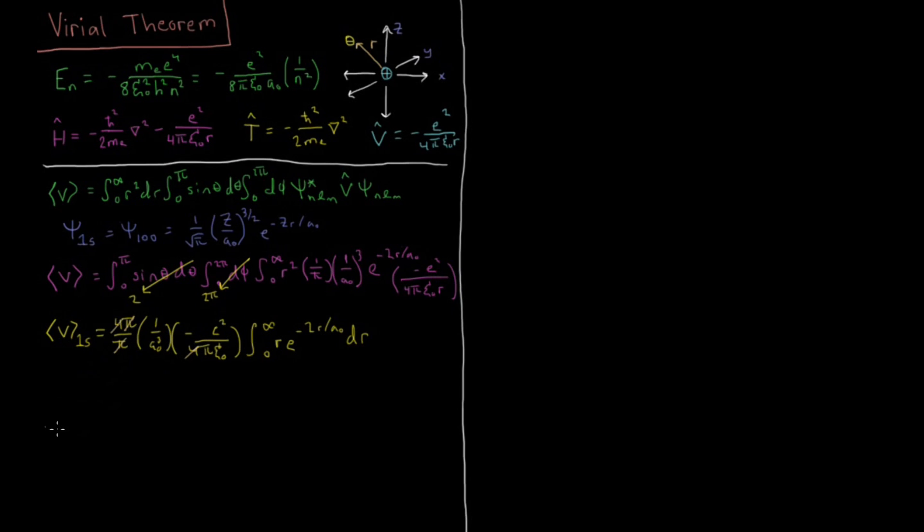So we need to also look at this integral here. If we look up in a table, we can find an integral that looks like integral of 0 to infinity of x to the n e to the minus a x dx equals n factorial over a to the n plus 1. And the specific values we have here, making this integral correspond to this one, set x equals r and n equals 1 and a equals 2 over a naught from our exponent up there in our exponential.